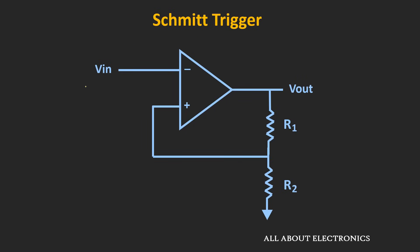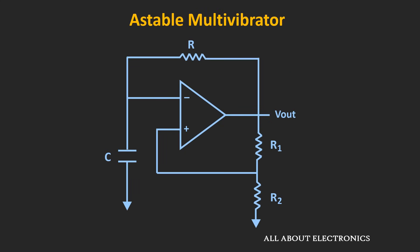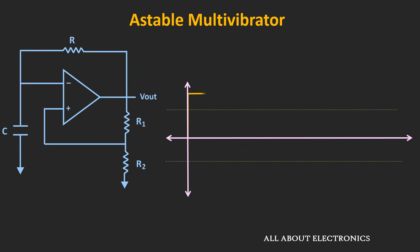So far in the Schmitt trigger circuit, we assumed that the input signal is applied externally. But if we provide feedback from the output to the input side via a resistor and capacitor, then the same circuit can be used as an astable multivibrator. Let's see the working principle of this astable multivibrator. We assume the initial output voltage is equal to positive saturation voltage, and from this path, the capacitor will start charging toward the positive saturation voltage.